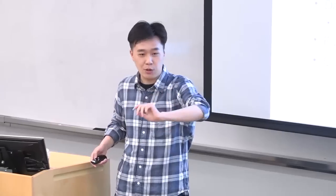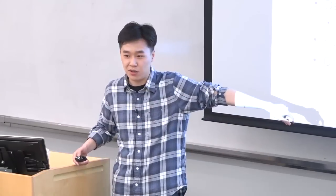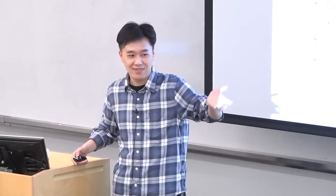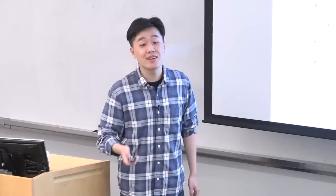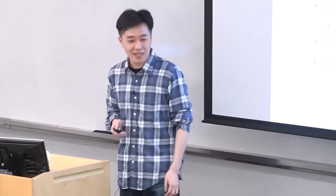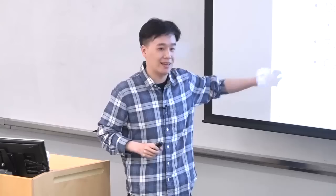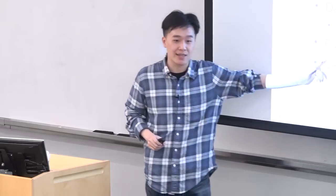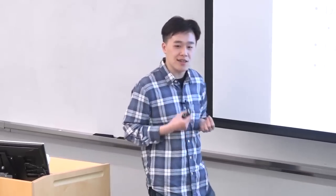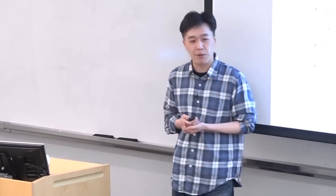Given these two assumptions, can we actually find a near-optimal policy using a polynomial number of samples? Anyone want to guess whether the answer is yes or no? The answer is: we don't know. The conjecture is no, and most people who work on ADP would say no. But we don't really have a lower bound against this setting — and this is what I'm going to talk about, walking through all the setup, nuances, and interesting implications.